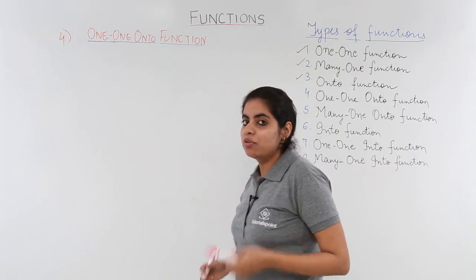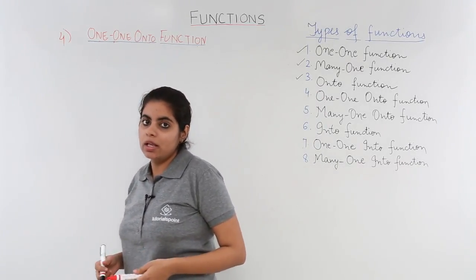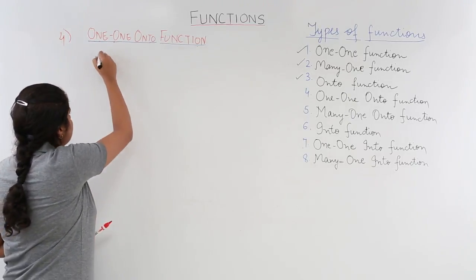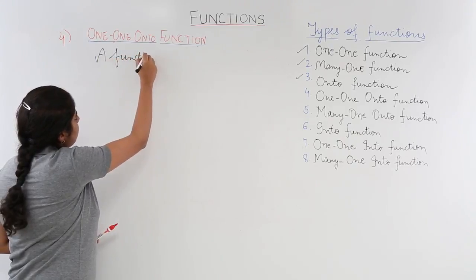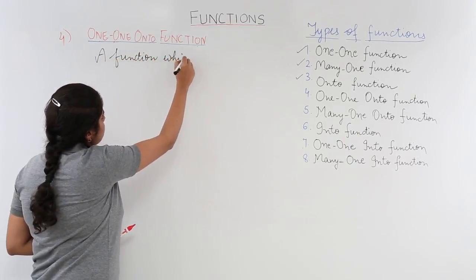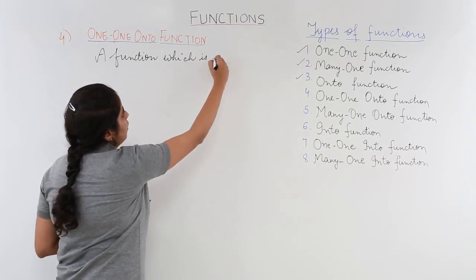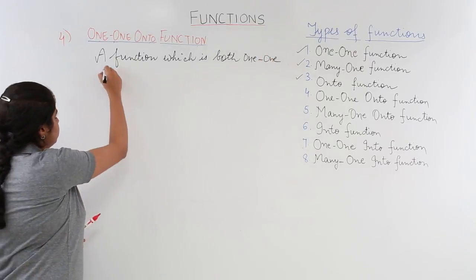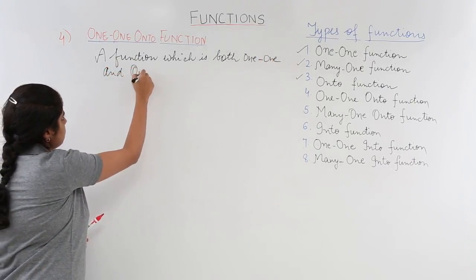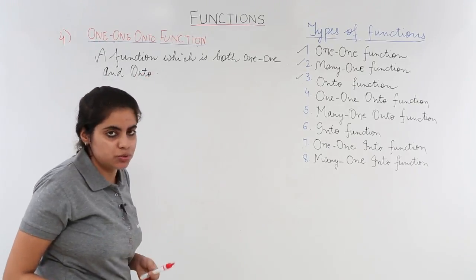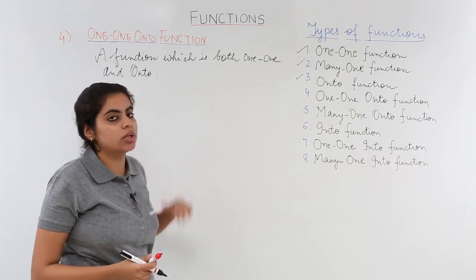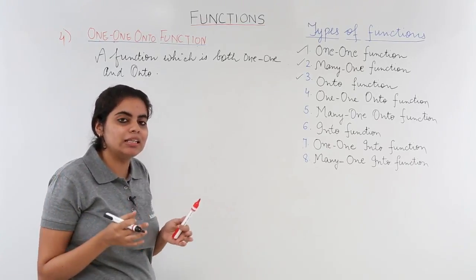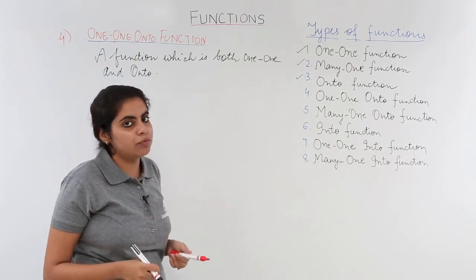What is a one-one onto function? A one-one onto function, as the name suggests, is one which is both one-one and onto. A function which is both one-one and onto is called a one-one onto function. We already know from previous knowledge what a one-one function and an onto function are; we just have to combine the study of both.